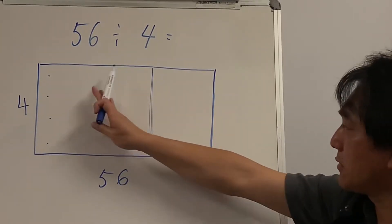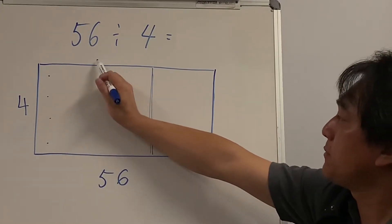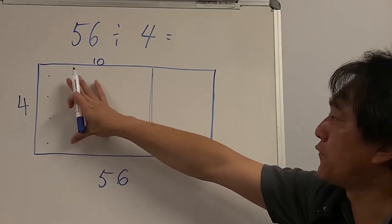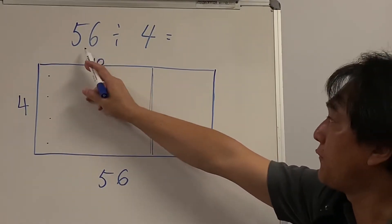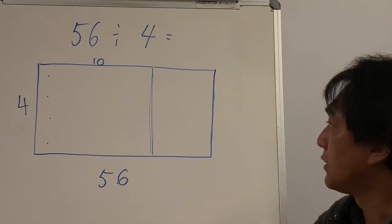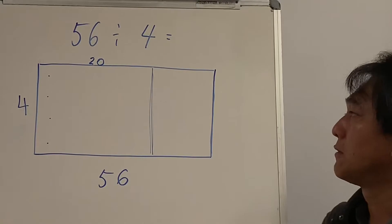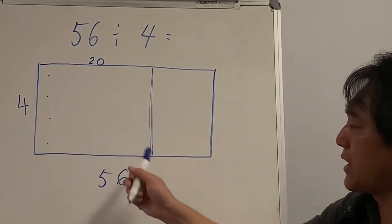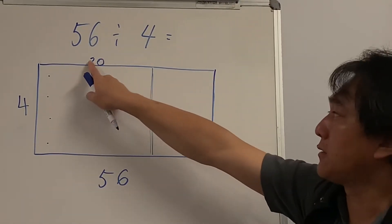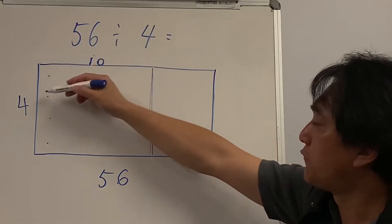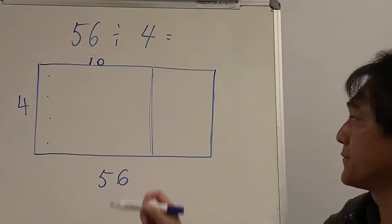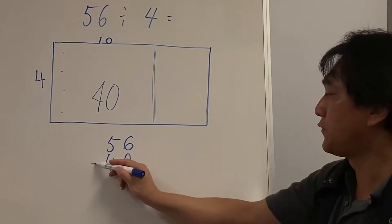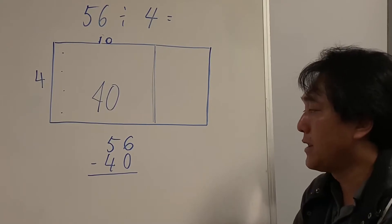We're going to find out: are there 10 lots of fours, 20 lots of fours, 30 lots of fours I can make in the first box? So 4 times 10 — I can put 40 cupcakes here. That's good because I have 56, so 40 fits. If I try 20 columns, 4 times 20 is 80 — but I only have 56, so 20 doesn't fit. I can only have 10 columns of 4, which is 40.